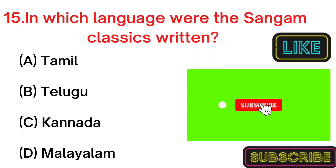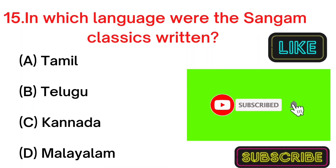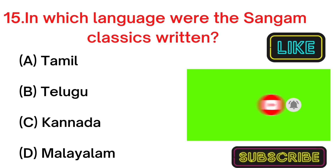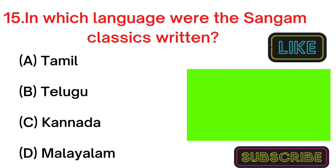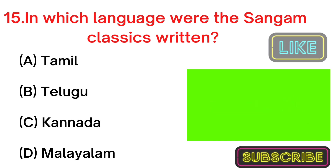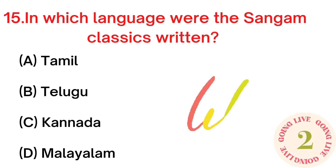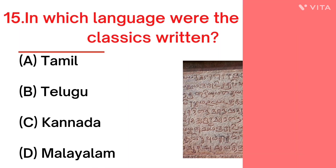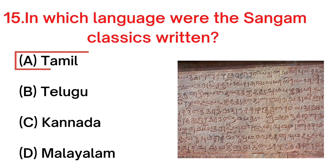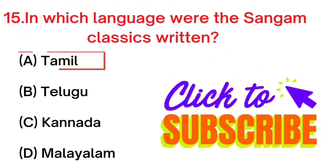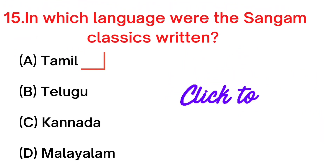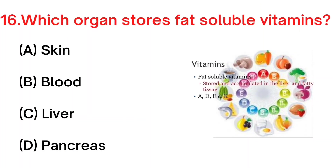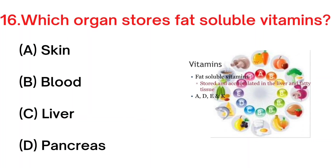Your next question: in which language were the Sangam classics written? A. Tamil, B. Telugu, C. Kannada, D. Malayalam. Your answer is A. Tamil. For more updates, subscribe to my channel GK Hindi and English.